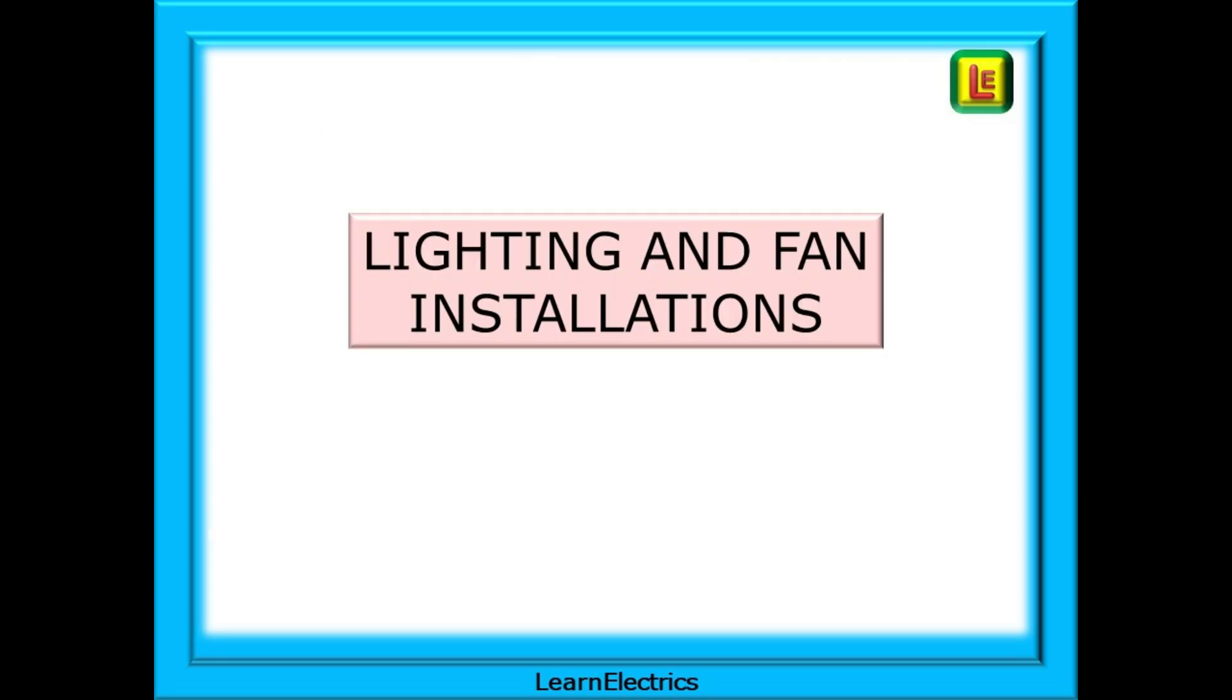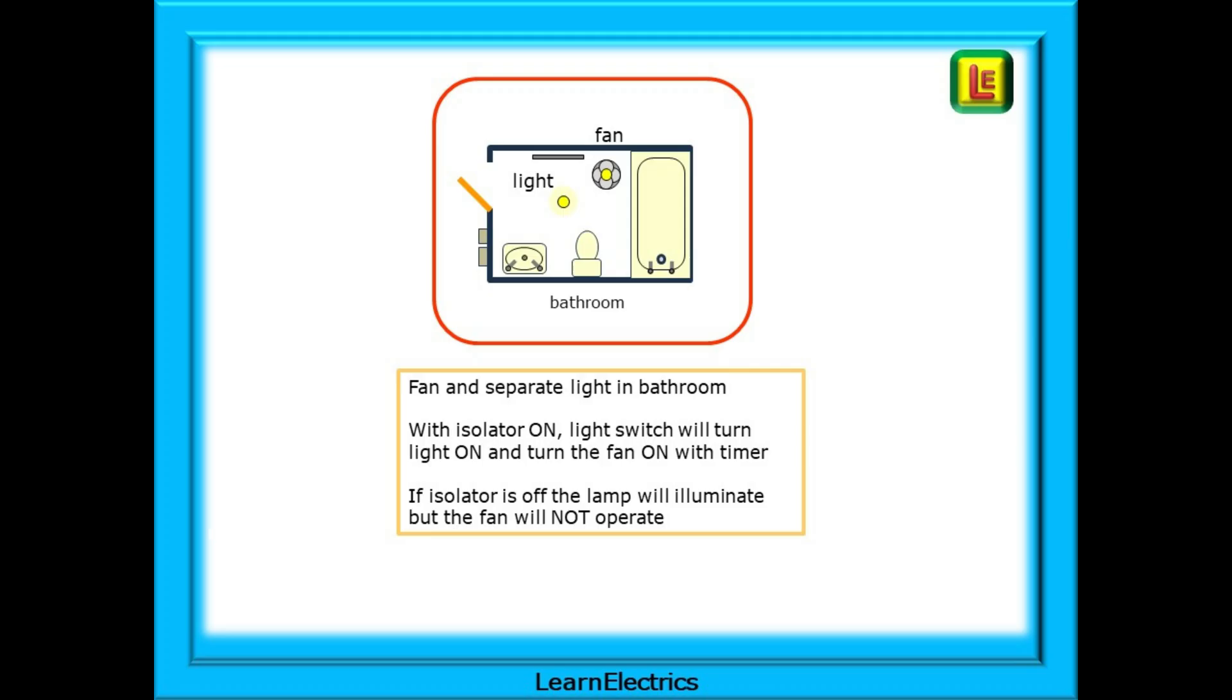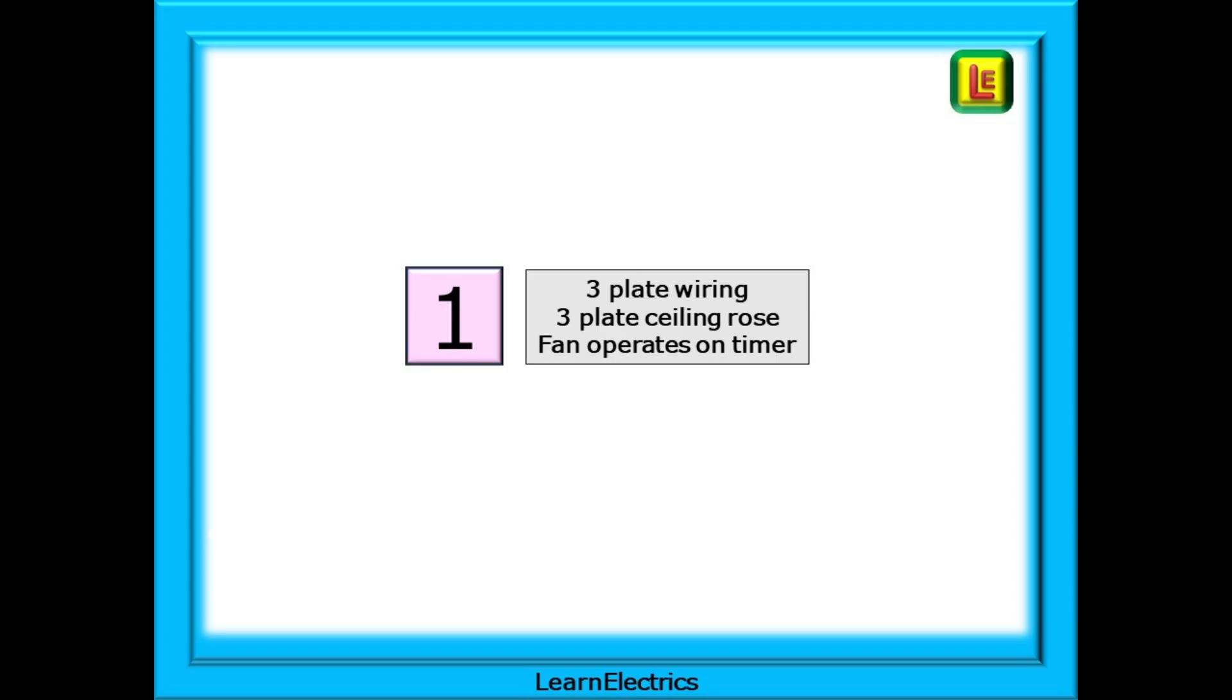Let's look now at some lighting and fan installations. This is the basic layout of a fan with a separate light in a bathroom. With the isolator on the light switch will turn the light on and turn the fan on and enable the timer function. If the light is turned off the fan will continue to overrun for say 10 minutes. If the isolator is in the off position the lamp will illuminate but the fan will not operate.